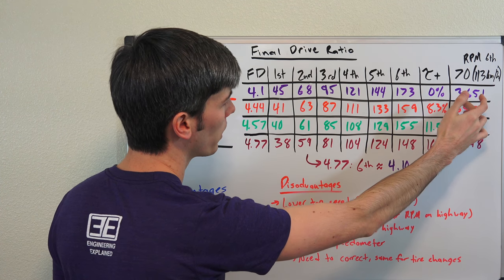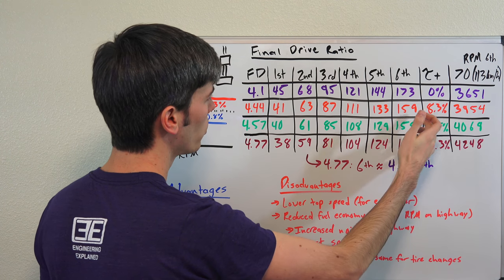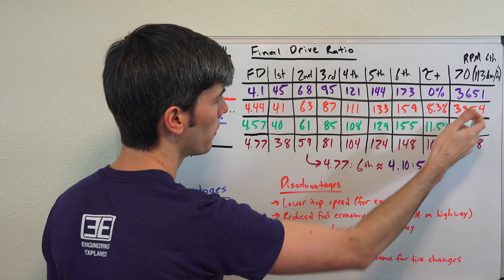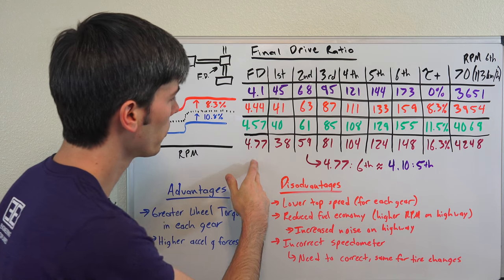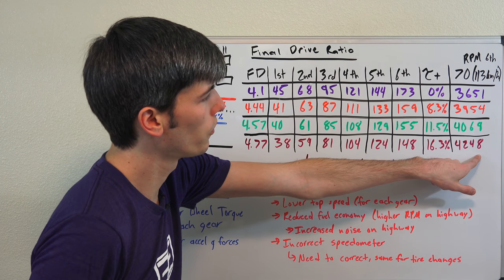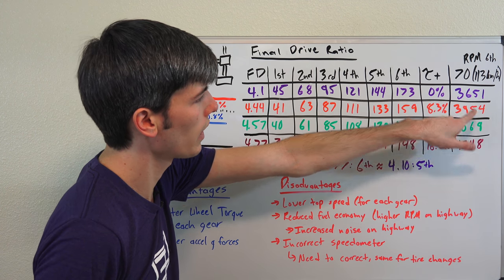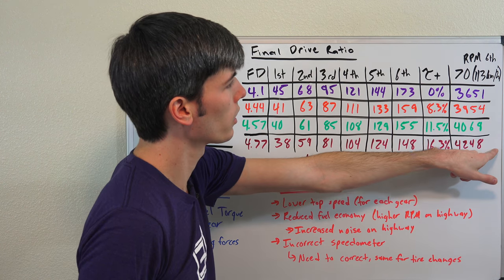The stock car will be at 3650 versus going to a 4.44 you'd be at 3950. If you were to go to a 4.77, 4250.